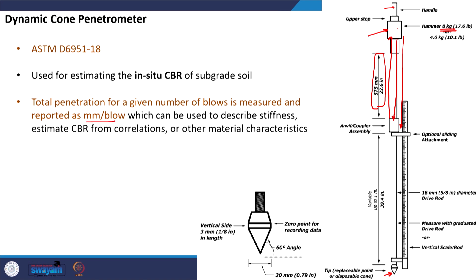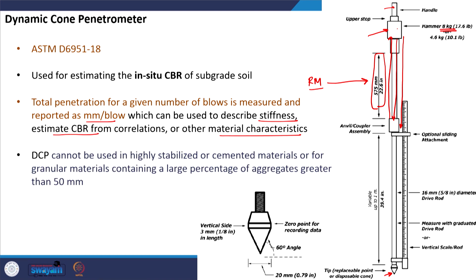The value of penetration in mm per blow can be used to describe the stiffness of the material, to estimate the CBR from existing correlations, and to assess other material characteristics. There are also correlations that give the value of resilient modulus directly from the DCP values. However, the DCP test cannot be used in highly stabilized or cemented materials because the weight used is not sufficient for penetration of the cone inside such stiff material.